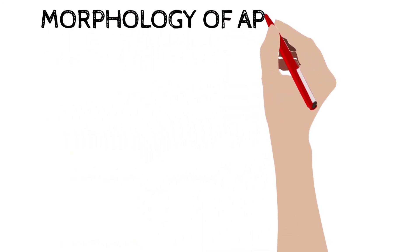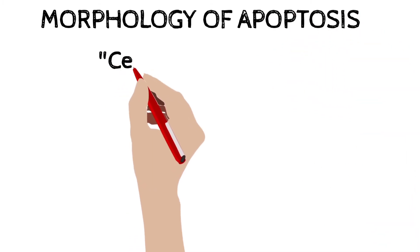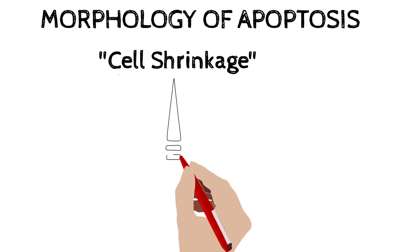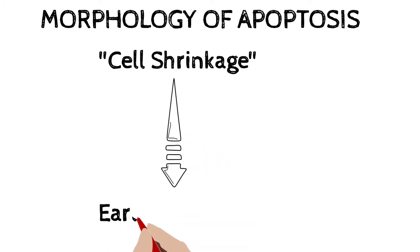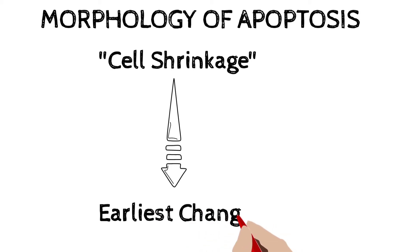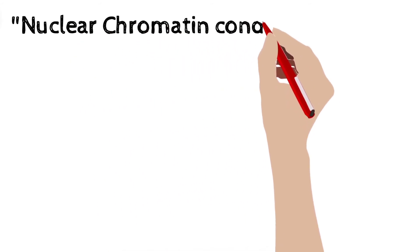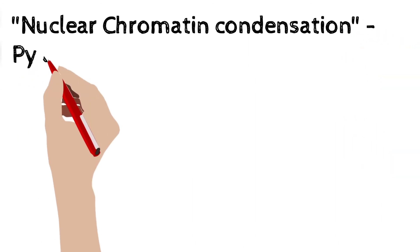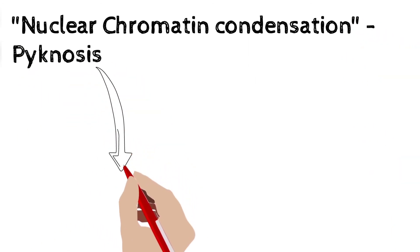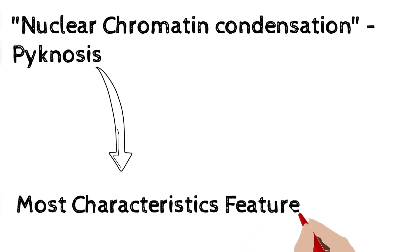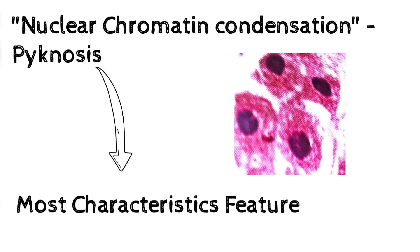Now we will see the morphology of apoptosis — the histopathological appearance. The first important finding is cell shrinkage: the cell size will be reduced, and this is the earliest change observed in apoptosis. Because of DNA damage in apoptosis, you can develop nuclear chromatin condensation — dark nuclear chromatin — which is known as pyknosis. Pyknosis is the most characteristic feature of apoptosis, and you can see it in the diagram.